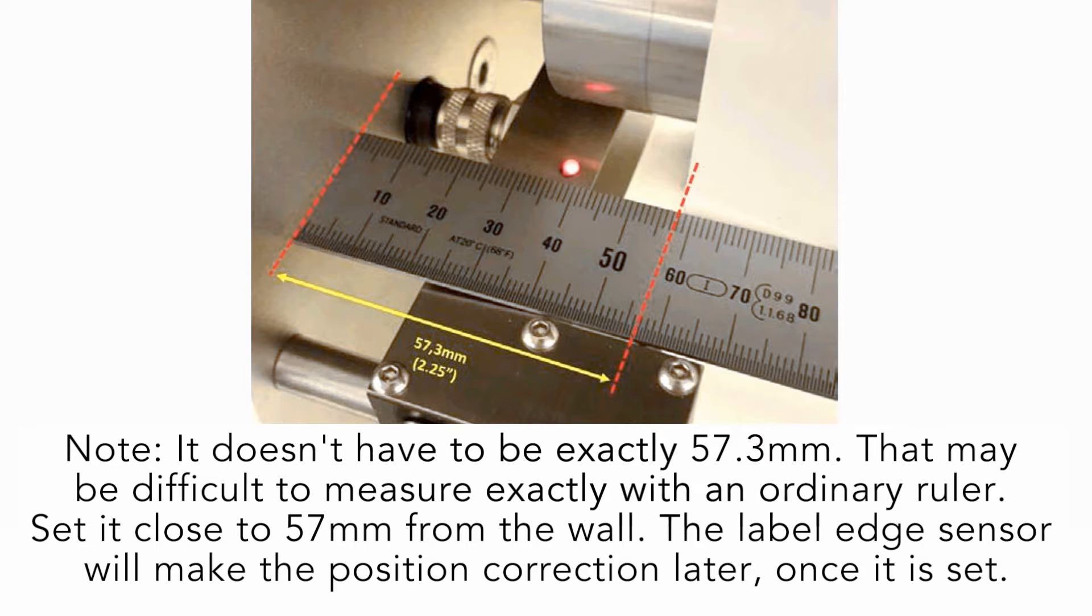It doesn't have to be exactly 57.3 millimeters, just set it close to 57 millimeters from the wall. The label edge sensor will make the position correction later once it's set.